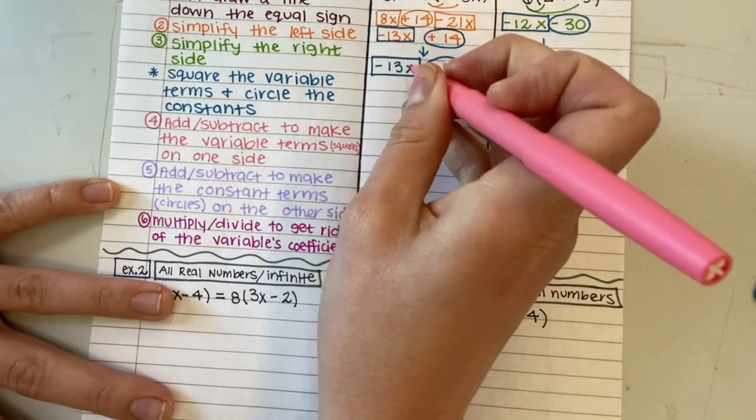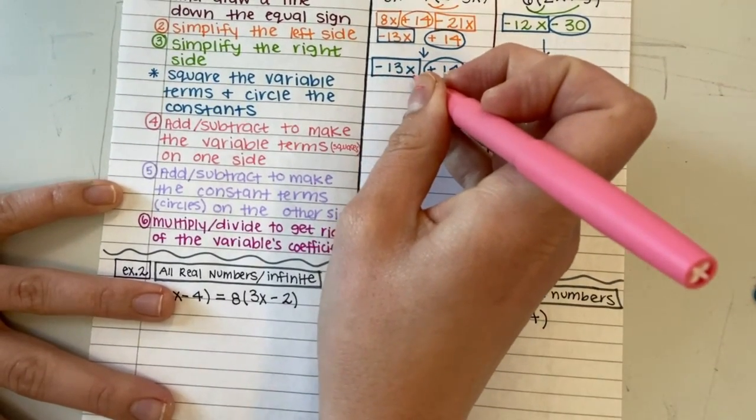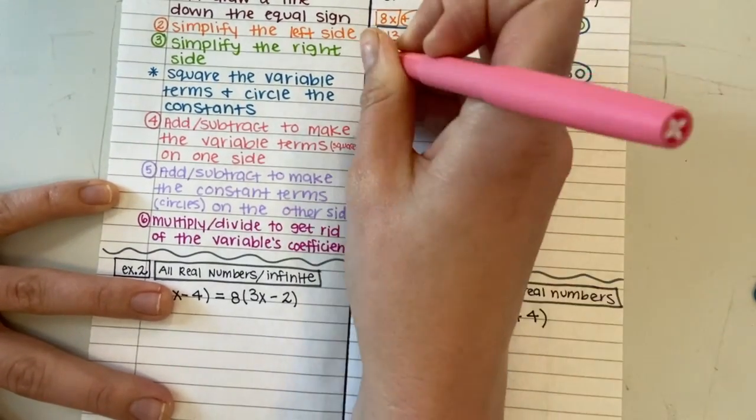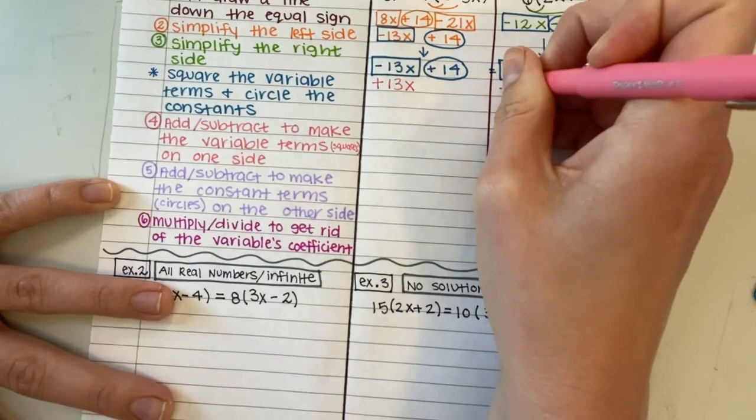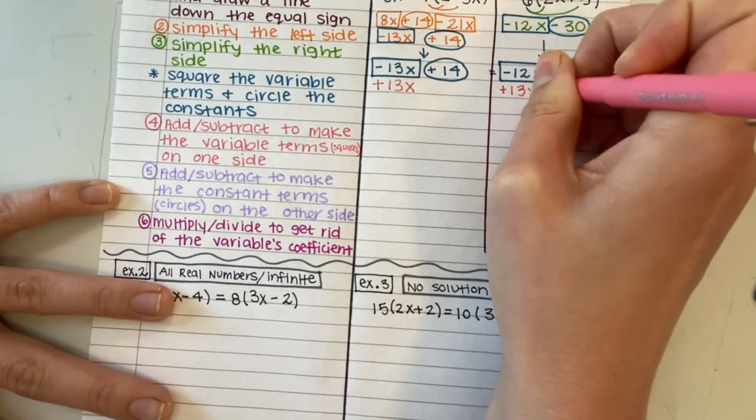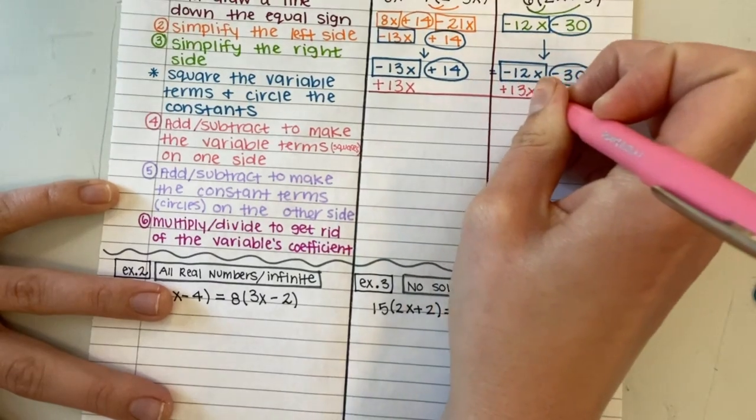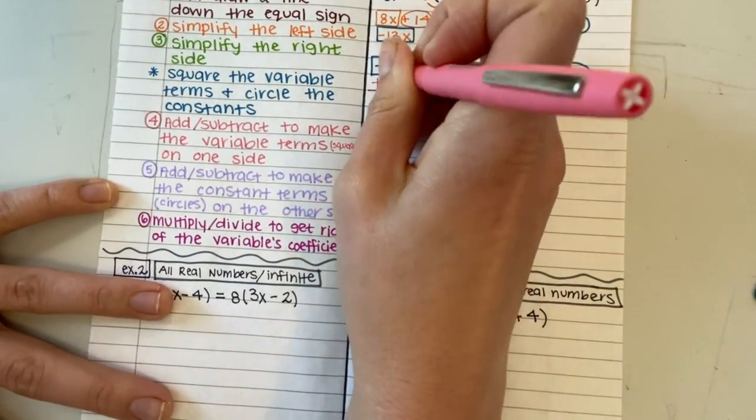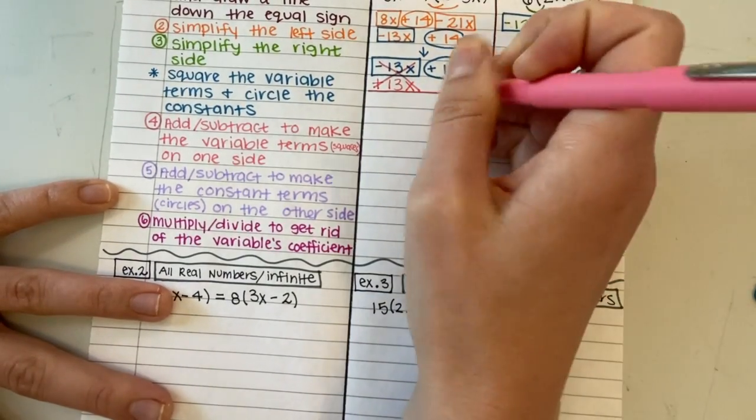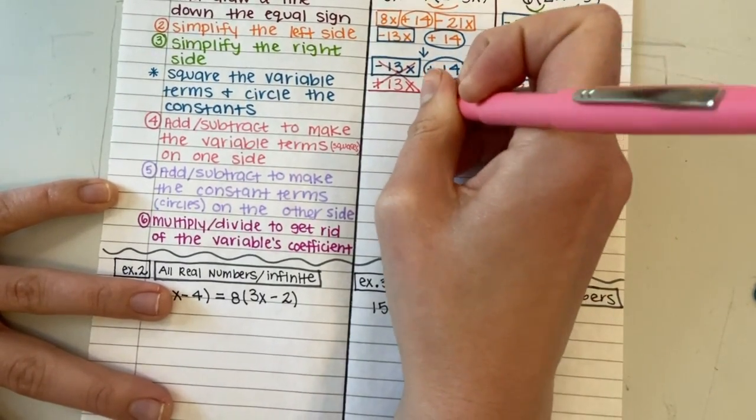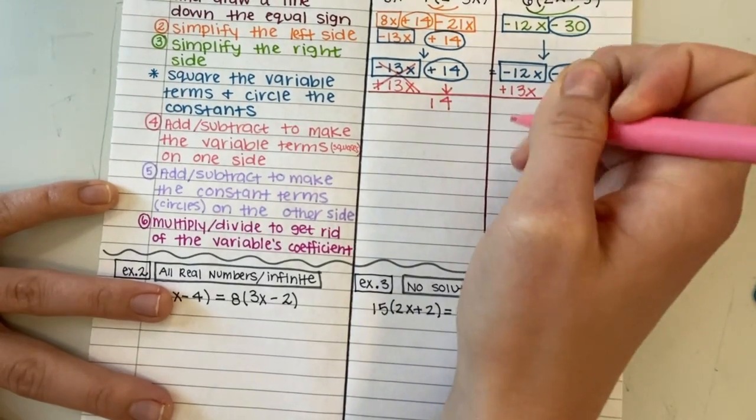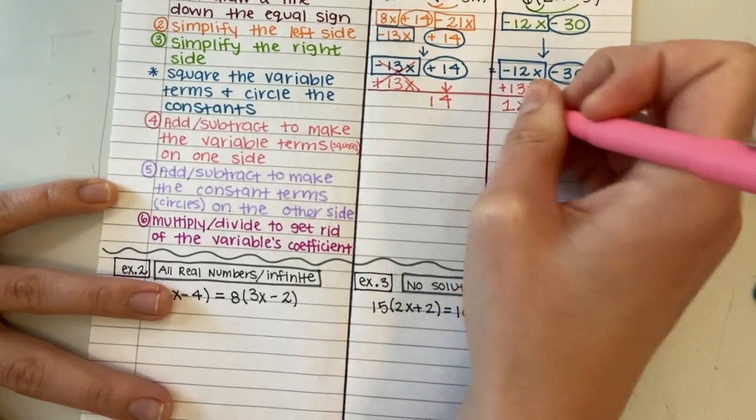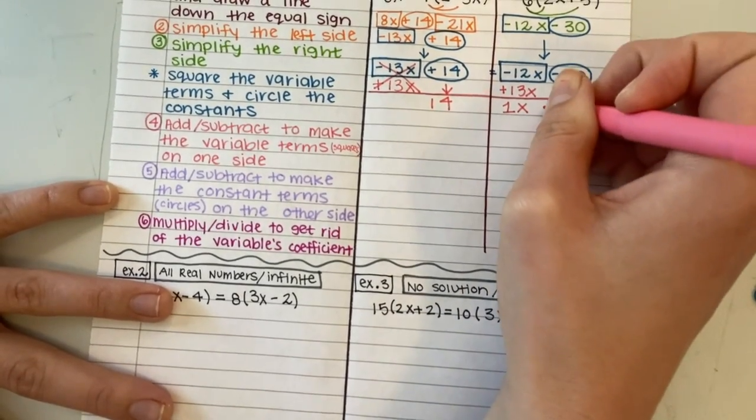So the opposite of minus 13x is to do plus 13x to get rid of it. I'm going to add 13x to this side too so that I do not violate our equal sign. Negative 13x and positive 13x cancel out. I'm going to bring down my 14. Negative 12x plus 13x gives me 1x, and I'm going to bring down this negative 30.